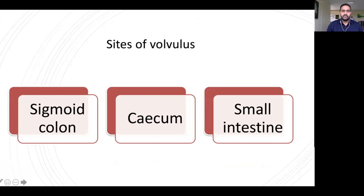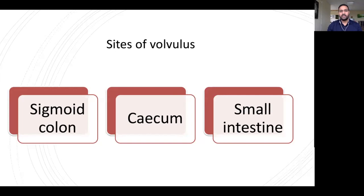Sites of volvulus: sigmoid colon, cecum, and small intestine. Sigmoid volvulus is the commonest type. In colonic volvulus, rotation always occurs toward the midline. Sigmoid colon is on the left side, so it rotates anti-clockwise toward the midline. The cecum is on the right side, so it rotates clockwise toward the midline to cause volvulus.